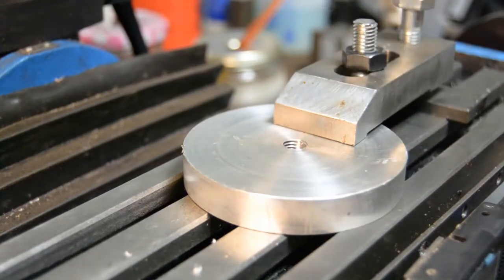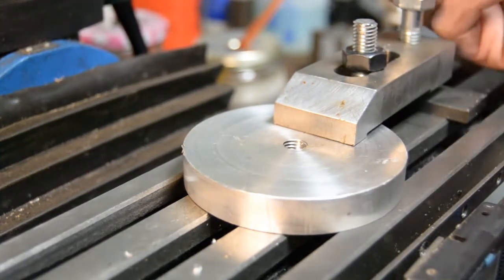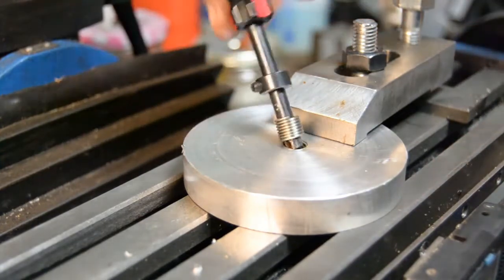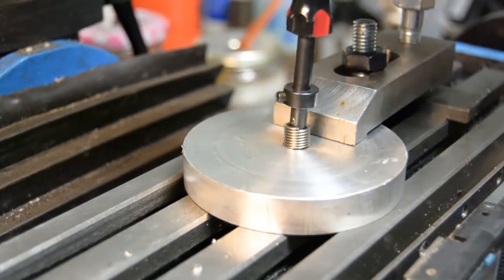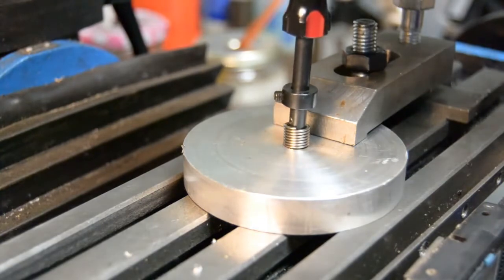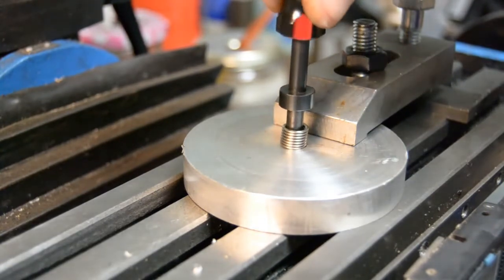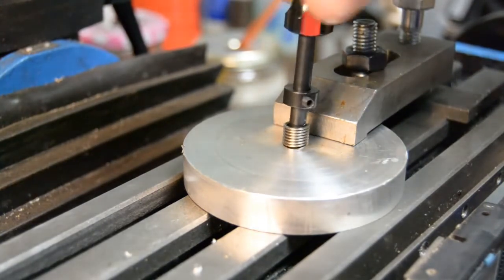So all we need to do is just get the installation tool with the insert on it lined up in the hole. And just like you would when you're installing a bolt, we just start to turn.